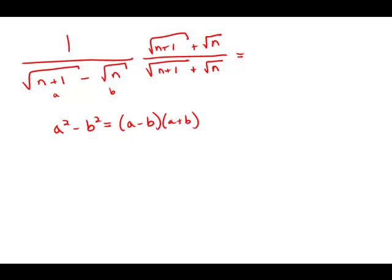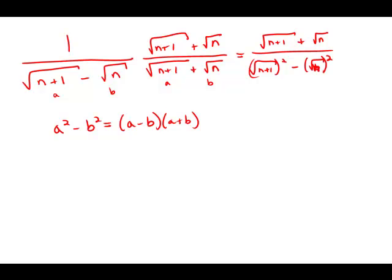So in the numerator, I just get this factor of n plus 1 plus root n. In the denominator, because I multiply a minus b times a plus b, I get a squared — which is the first radical squared — minus b squared, the second radical squared, radical n squared.